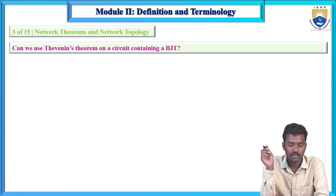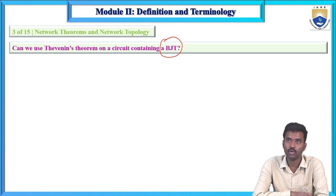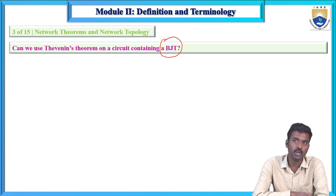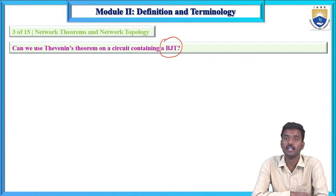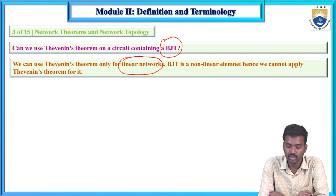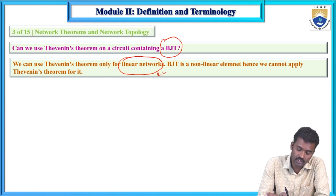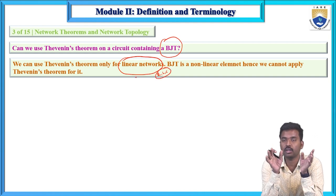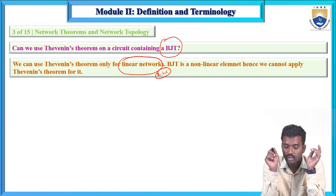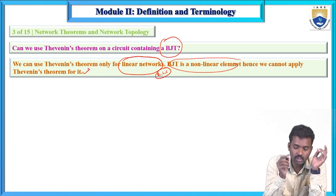Can we use Thevenin's theorem on a circuit containing a BJT? A BJT is a non-linear element, as are diodes, FETs, and op-amps. The superposition theorem's limitation is that it cannot be applied to non-linear networks. It can only be applied to linear networks containing linear elements such as resistors, inductors, capacitors, voltage sources, and current sources. We cannot apply superposition theorem to circuits with BJT.